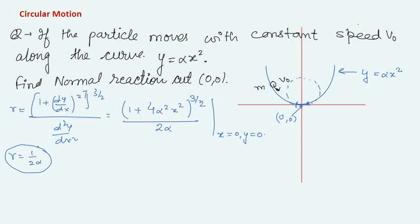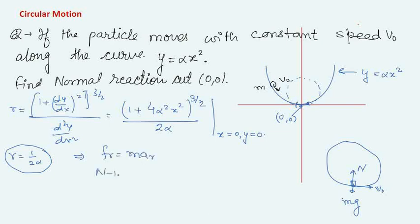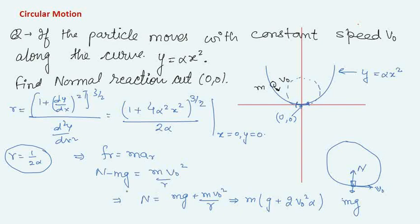Now we have a circular motion problem at the lowest point of the curve. The normal reaction N acts upward, mg acts downward, and the speed is v₀. Writing the radial equation: N − mg = mv₀²/R. Substituting R = 1/(2α): N = mg + mv₀²·2α = m(g + 2αv₀²). So the normal reaction at (0, 0) is m(g + 2αv₀²).